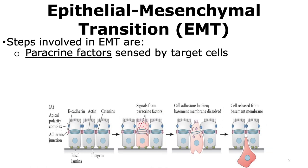The first step is normally the secretion of paracrine factors that are sensed by the target cells. The target cell, which is the middle cell in the diagram shown in the blue box, binds to the paracrine factors present in the environment through its receptors, and a series of signal transduction events occur.